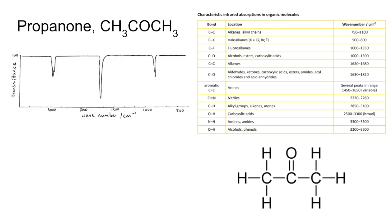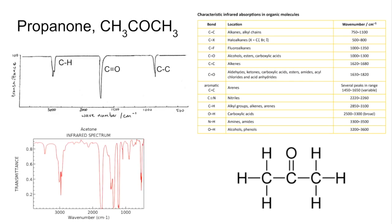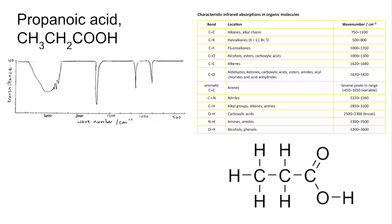Propanone now. What kind of bonds have we got? C-H, C single bond C, and C double bond O. Going from left to right we've got the C-H bond, there's the C double bond O, and there's the C single bond C. There's the actual spectrum.